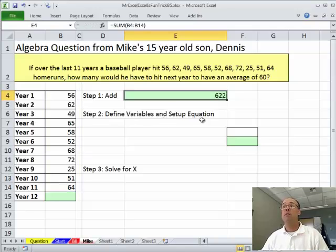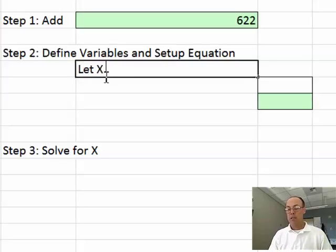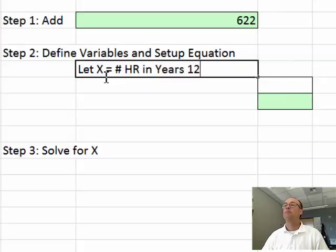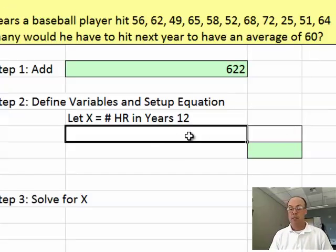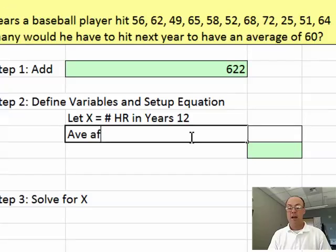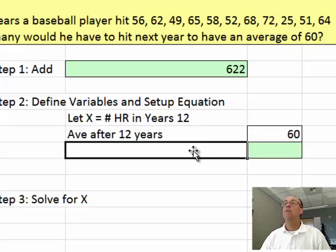If you click up here and hit the F2 key or double-click, you can see, sure enough, that formula is correct. Step 2, we need to define our variables and setup equation. Now, we're solving for number of home runs in year 12. So I'm going to say let X equals number of home runs in year 12.